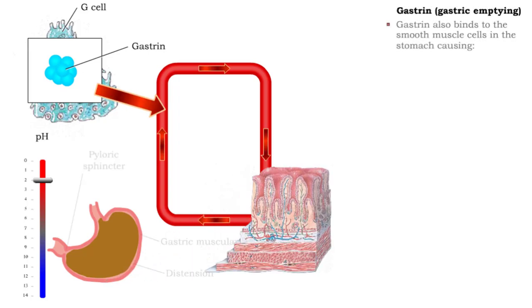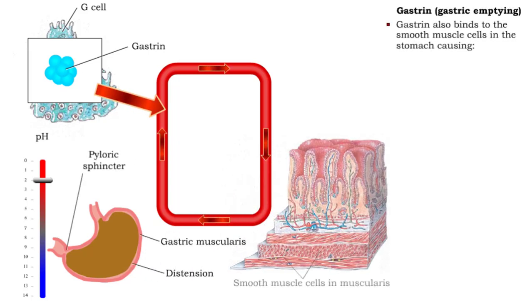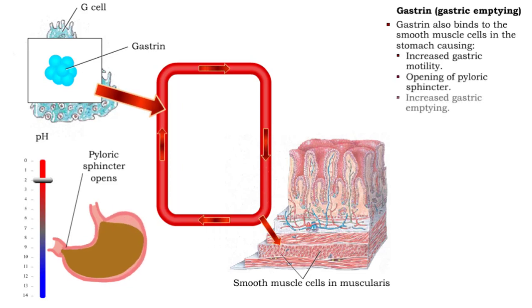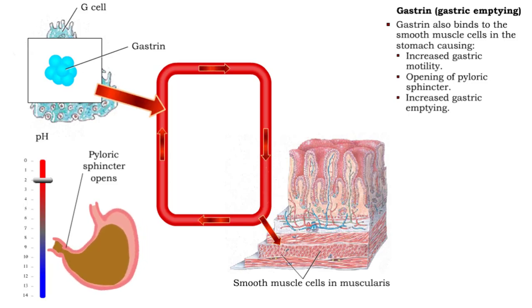Gastrin also targets smooth muscle cells in the gastric muscularis and pyloric sphincter. As a result, gastric motility increases and the pyloric sphincter opens. These effects increase gastric emptying and reduce distension.